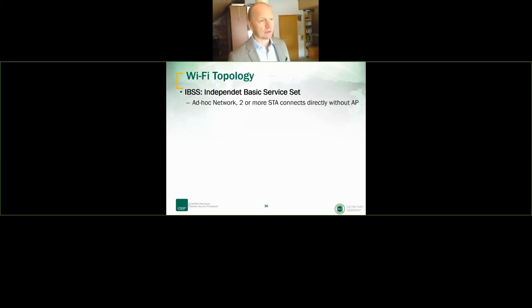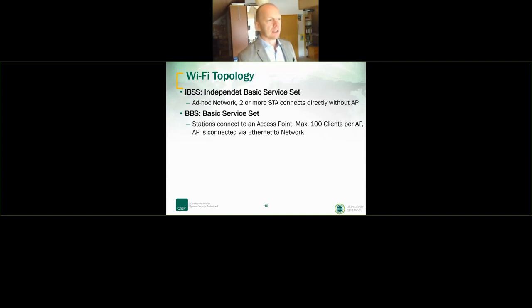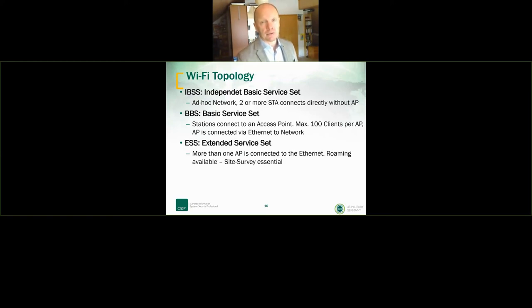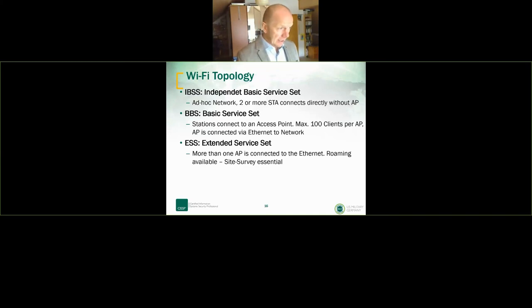We have different Wi-Fi topologies. There's an ad hoc network — two stations connected directly without an access point. There's the Basic Service Set (BSS) — one access point with several stations connected, and that AP is connected to a wired Ethernet network. The Extended Service Set (ESS) is more than one access point connected to Ethernet — this is what you use in multiple areas, buildings, and sites.